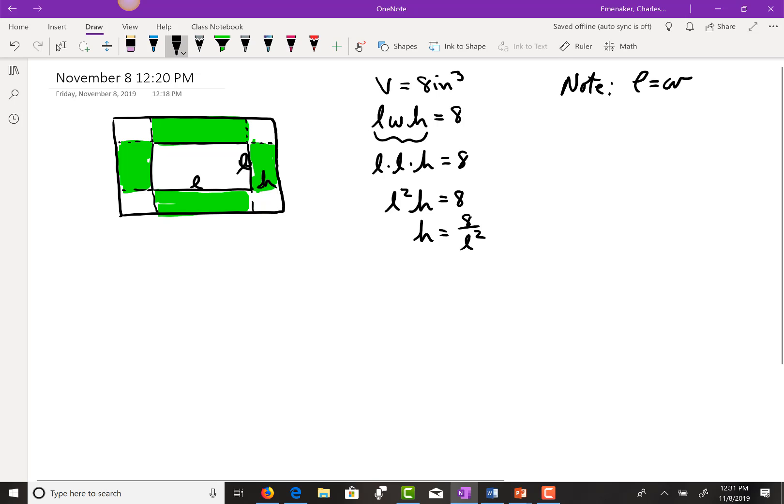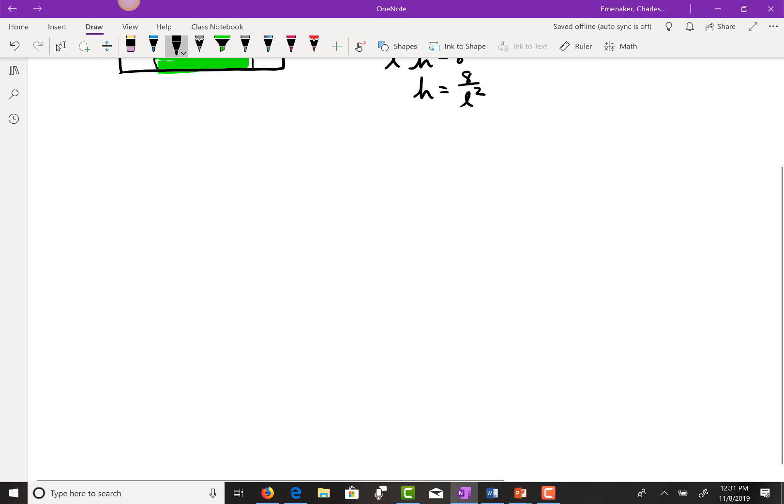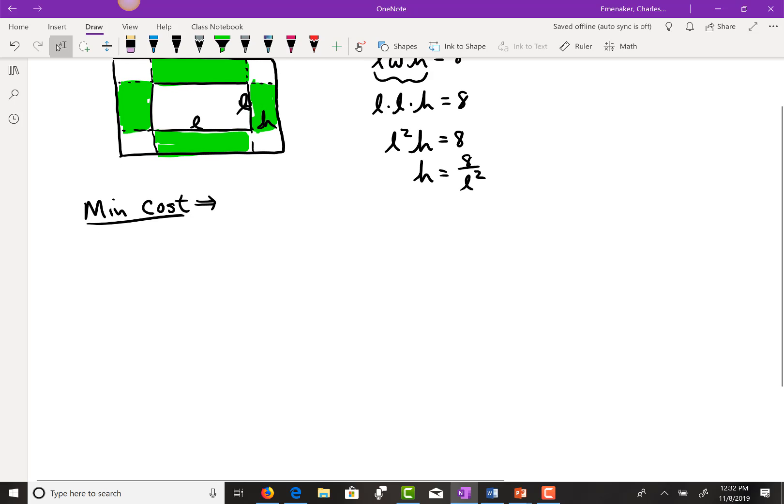So we've got this box. It needs to have a volume of eight cubic inches. Do we want to make this box in the most expensive or the least expensive way possible? Least expensive. Because when people get whatever the product is, I think I said jelly beans, what do they do with the box? They throw it away. They don't want to pay a bunch of money for something they're throwing away. That's why jelly beans no longer come in boxes. They come in plastic bags. It's cheaper.